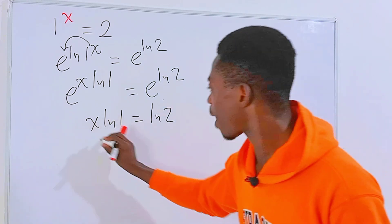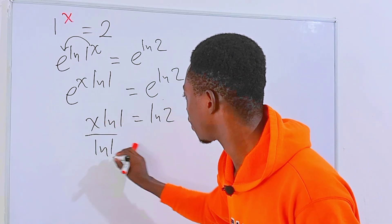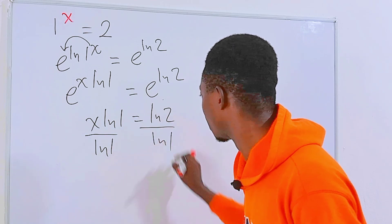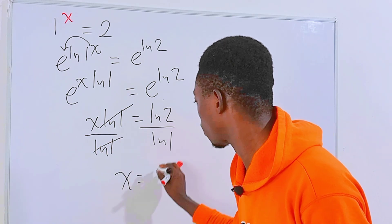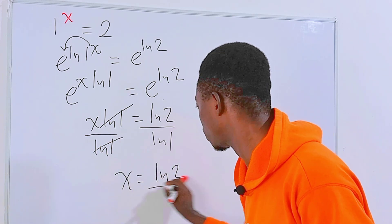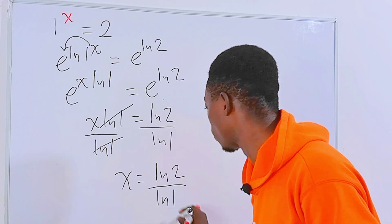Let's go ahead and divide both sides of the equation by ln of 1 so that we are left with x equals ln of 2 divided by ln of 1.